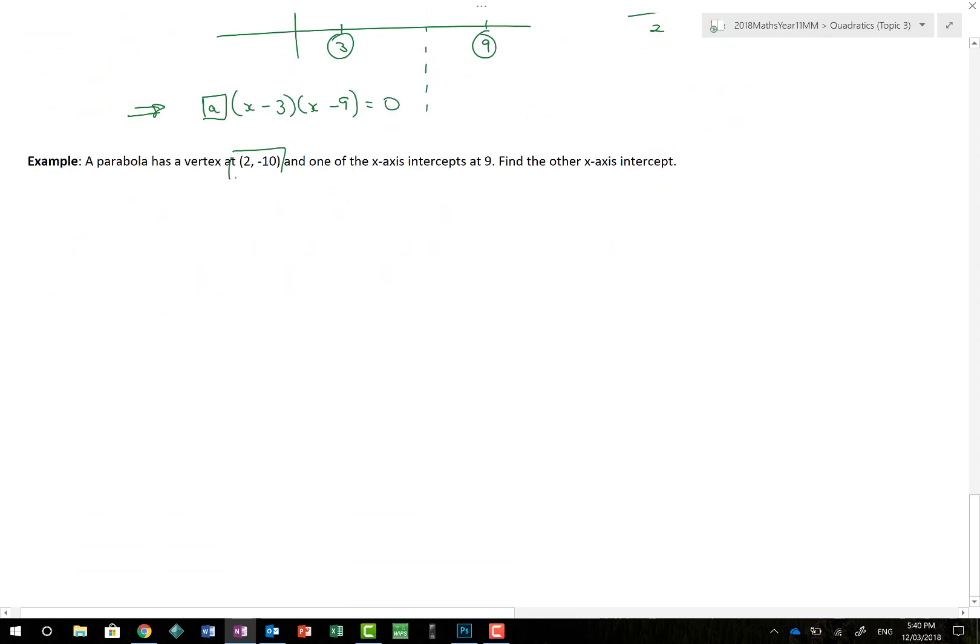A parabola has a vertex at 2 comma minus 10. One of the x-axis intercepts is at 9. Find the other x-axis intercept. Well, so the point of it is here, we're saying we've got one axis intercept at 9. You have a vertex at 2 minus 10. Well, I'm not interested in the minus 10. I'm actually only interested in the value of 2. And if you remember, our parabola has got to be symmetrical. So, the distance between there and there has to be the distance between there and there. Well, if it's 7 that way, then I'm going to take 7 away from 2, which gives me negative 5. And there we go. My x-axis intercept on the other one is equal to negative 5. Simple, really, using this basic idea of axis of symmetry.